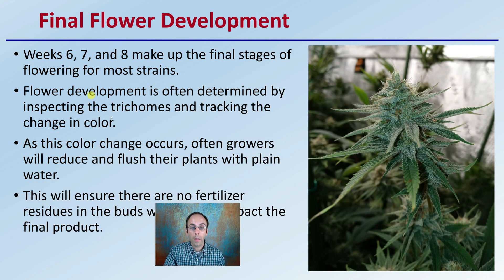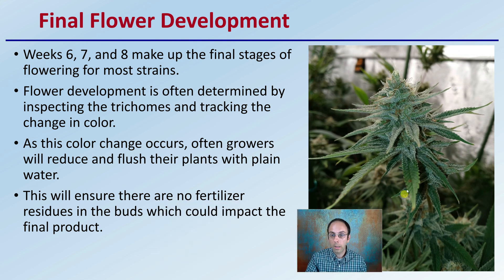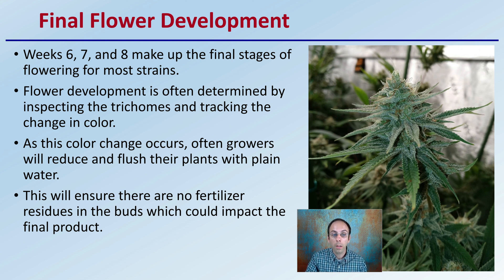In final flower development, weeks six, seven, and eight make up the final stages of flowering in most strains. Flowering development is often determined by inspecting the trichomes and tracking their change in coloration. As the color change occurs, growers will often reduce feeding and flush their plants with plain water to reduce the amount of salt buildup in the root zone. This will also ensure there are no fertilizer residues in the buds, which could impact the final product's taste as well as inspection results.